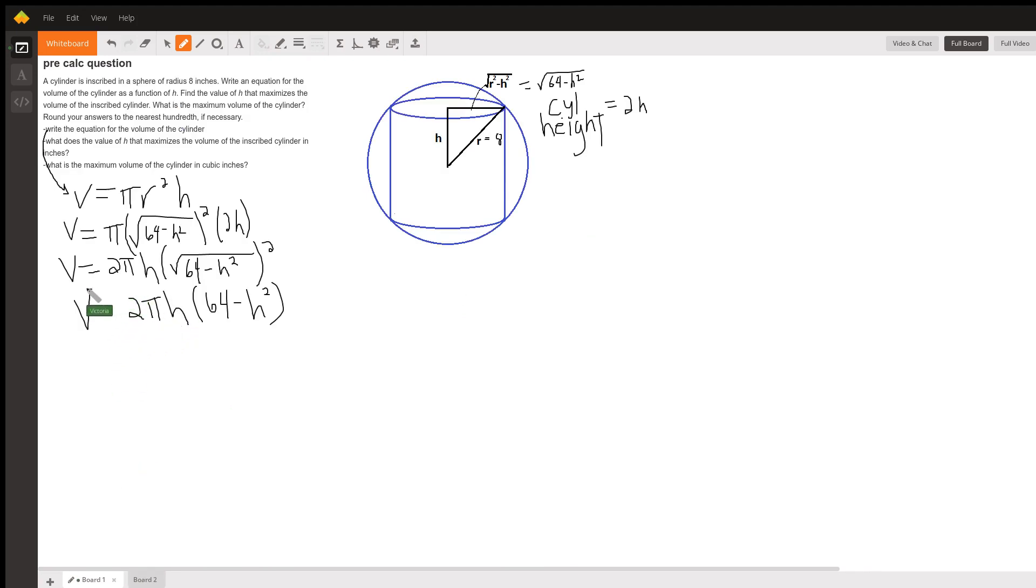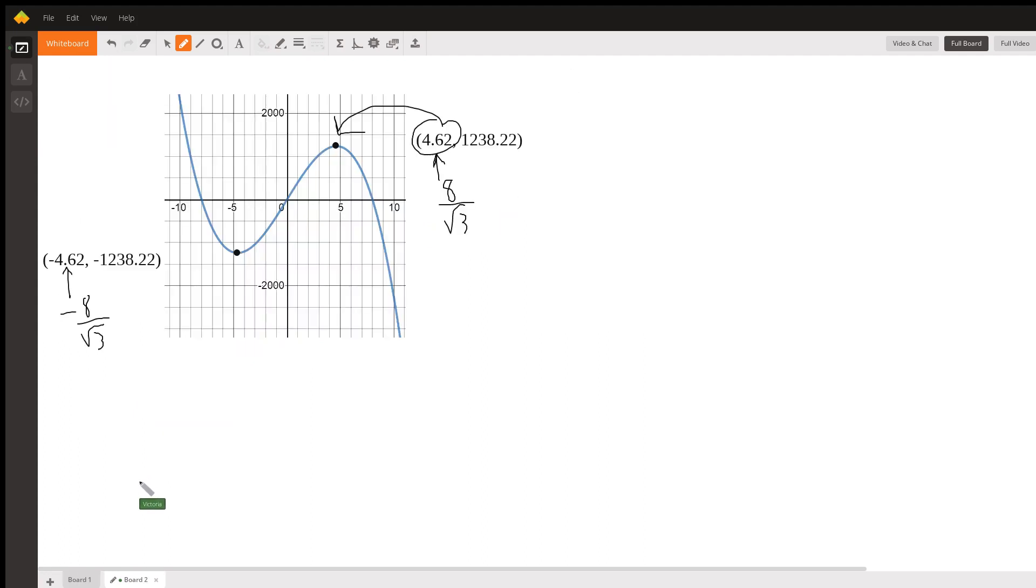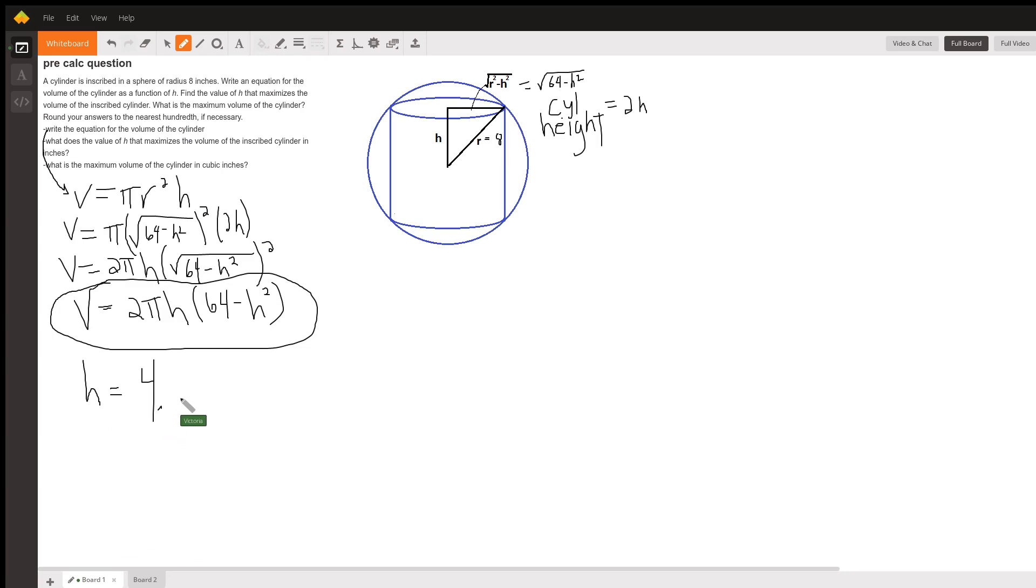So here's our volume formula in h's. And the h that gives us the max volume was 4.62. And the maximum volume of the cylinder is what we get when we plug that h in. So this is 2 pi times 4.62 times 64 minus 4.62 squared.